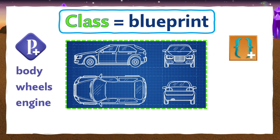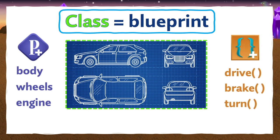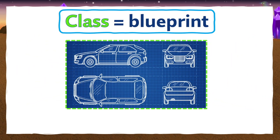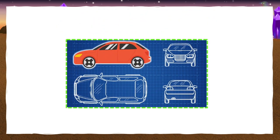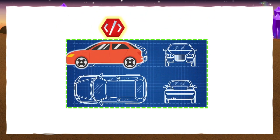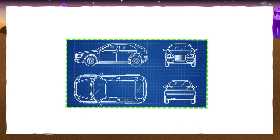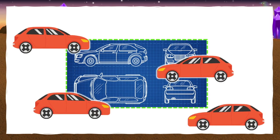And functions all cars can perform, like drive, brake, and turn. But the blueprint itself doesn't really do anything on its own — it just gives you instructions for how to make something. Take the blueprint and use it to build a car, and now you've created an object.